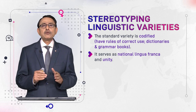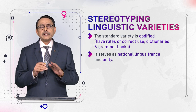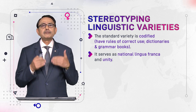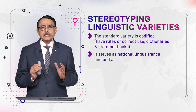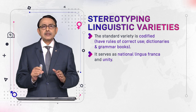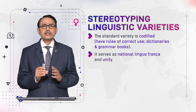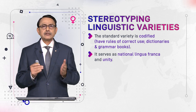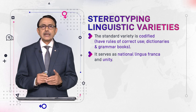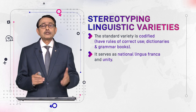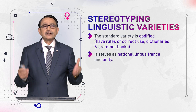Lingua franca is actually the name of a variety of Italian, and this term is borrowed from Italian. It means the language that is spoken by people whose mother languages are different — that common contact language they use when they communicate is called lingua franca. So, standard language is a language of contact, and it is also understood that it creates unity among diversity.